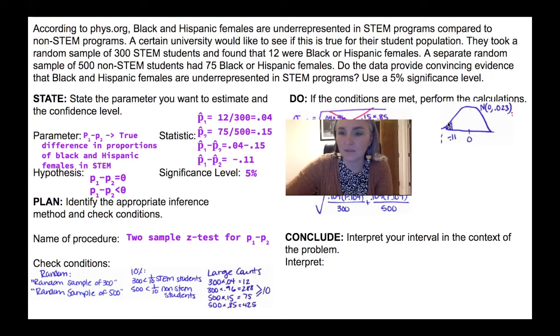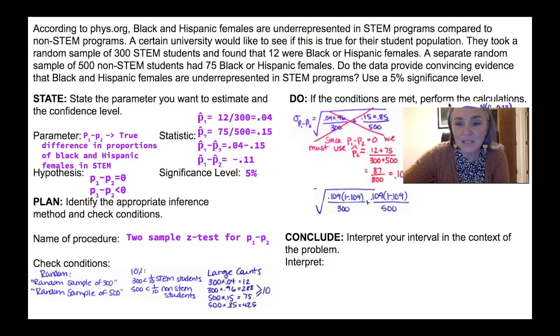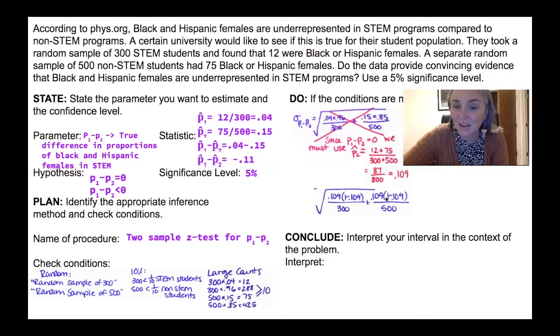I think it's zero, but negative 0.11 actually happened. Is that rare? Is it so rare that I'm convinced? So that's kind of what we're looking at here. So I need a standard deviation.